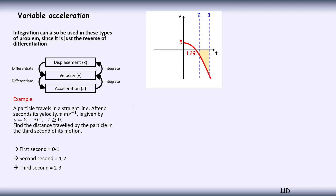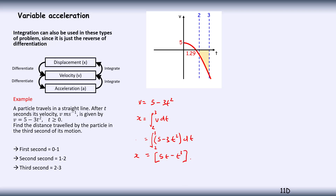We're given that v, the velocity, is equal to 5 minus 3t squared. So the displacement x is going to be the integral of velocity with respect to t. Because we want to find the displacement between the second and third second, we're going to integrate between 2 and 3 - definite integration between second 2 and second 3. V is given by 5 minus 3t squared, in brackets, with respect to t.